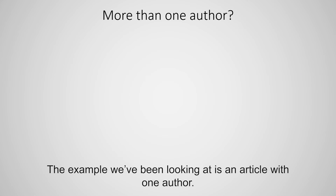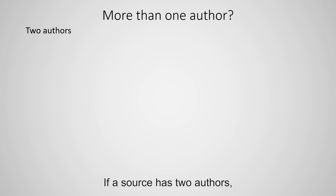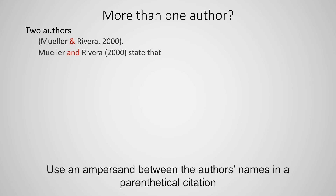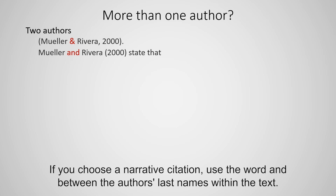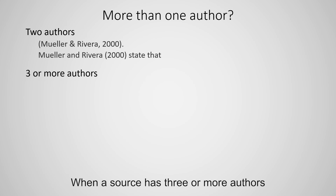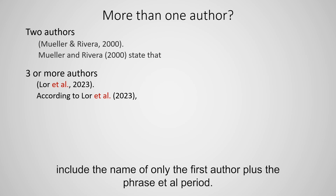The example we've been looking at is an article with one author. If a source has two authors, use an ampersand between the author's names in a parenthetical citation. If you choose a narrative citation, use the word 'and' between the author's last names within the text. When a source has three or more authors, include the name of only the first author plus the phrase 'et al.'